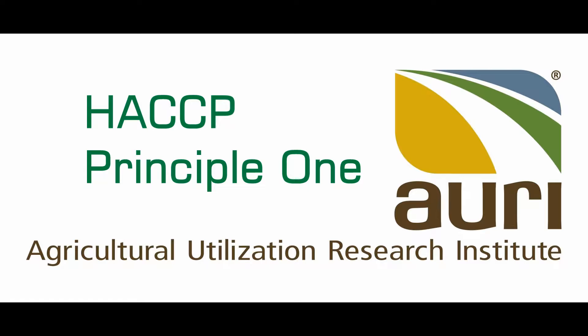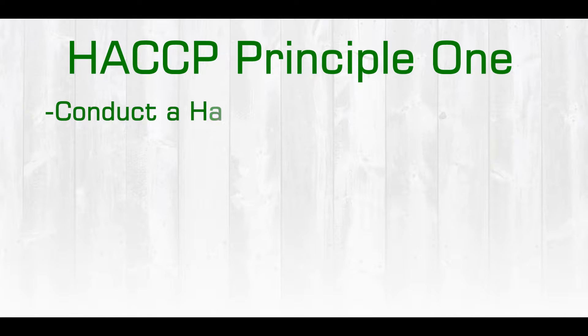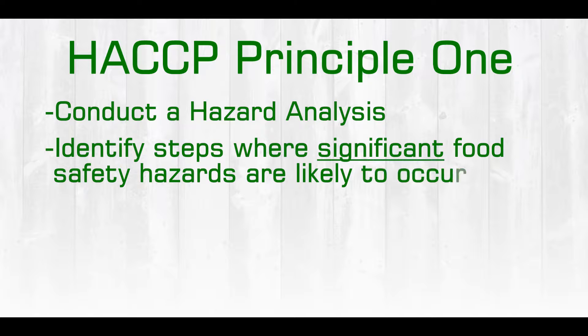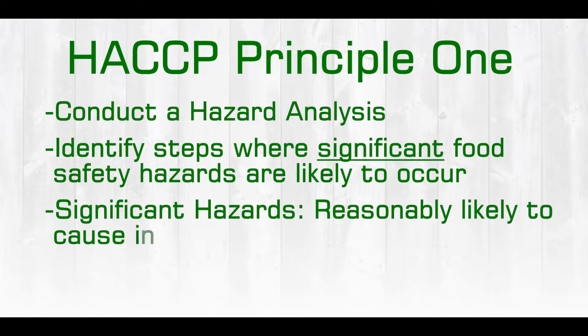Welcome to video number two, where we will discuss HACCP principle number one, which is to conduct a hazard analysis. Through this hazard analysis, we need to identify the steps in the process where significant food safety hazards are likely to occur. It's important that we keep in mind only significant hazards, as these are those that are reasonably likely to cause injury or illness if not effectively controlled.